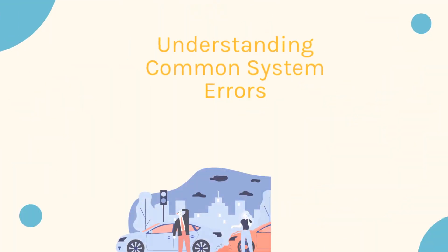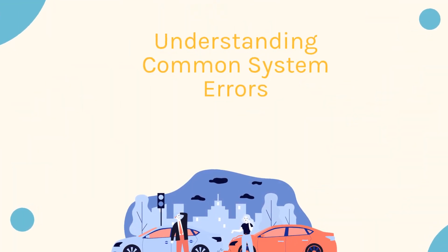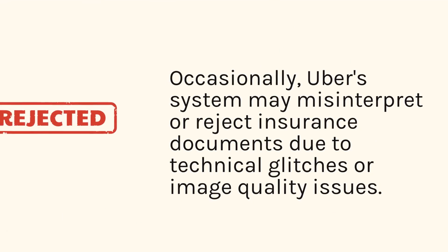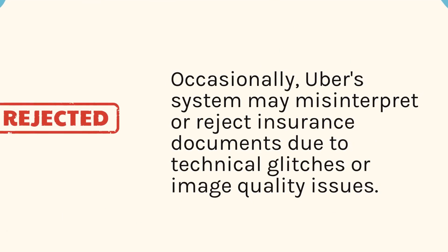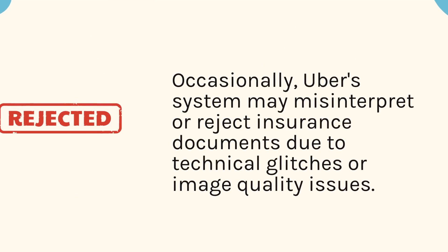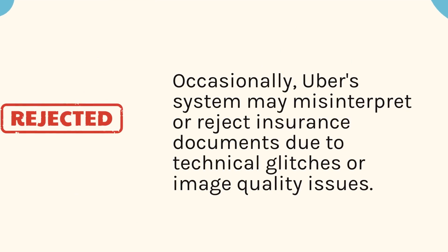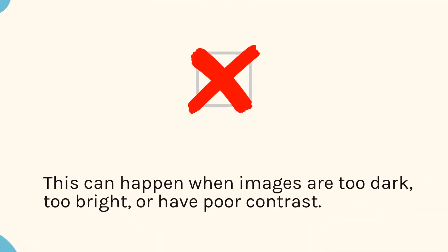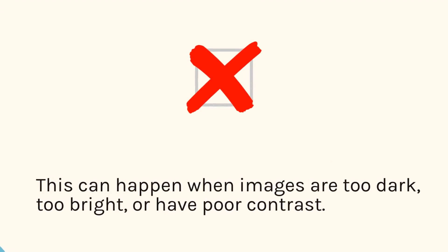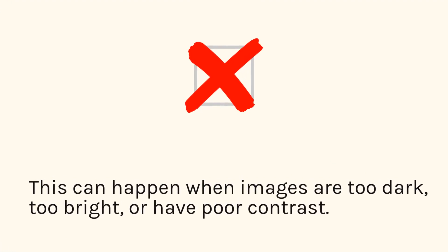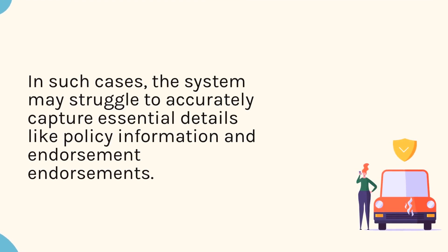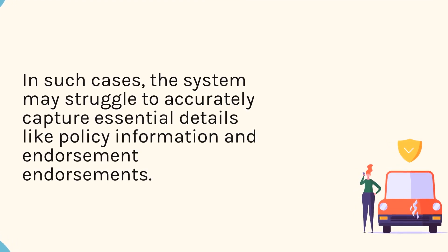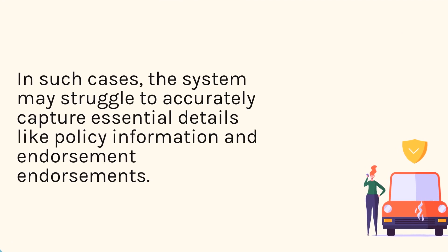Understanding Common System Errors. Occasionally, Uber's system may misinterpret or reject insurance documents due to technical glitches or image quality issues. This can happen when images are too dark, too bright, or have poor contrast. In such cases, the system may struggle to accurately capture essential details like policy information and endorsements.